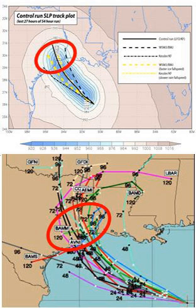There has been research showing that the choice of subgrid scale parameterization schemes can influence hurricane intensity, track, speed, and precipitation rates. Microphysical assumptions may directly or indirectly modulate storm structure, resulting in small changes in hurricane track which can have societal consequences.